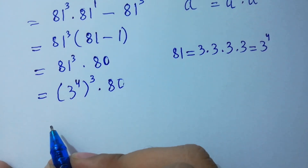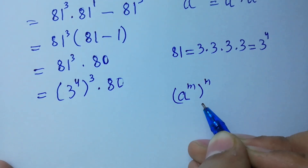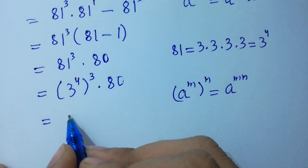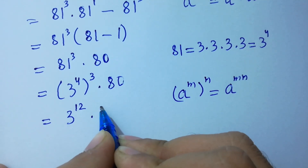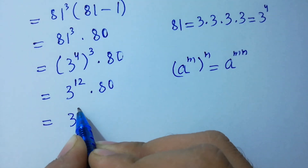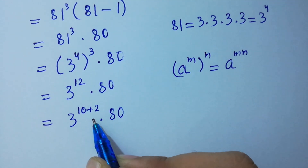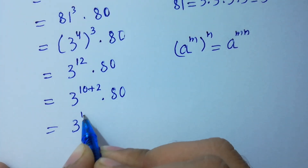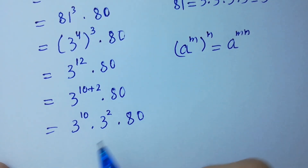Since a to the power m, to the whole power n, equals a to the power m times n, we have 3 to the power 4 times 3, giving 3 to the power 12, times 80. This is the same as 3 to the power 10 plus 2, times 80, because 10 plus 2 equals 12. So we have 3 to the power 10, times 3 to the power 2, times 80.